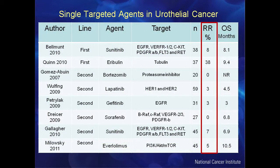This is a list of targeted therapies already studied in bladder cancer — either in the first-line setting (newly diagnosed metastatic disease without prior treatment) or second-line (after prior chemotherapy). Unfortunately, response rates are low. These drugs work in other solid tumors, but this highlights our need to better understand the biology of bladder cancer in order to use drugs that will actually target the tumor.